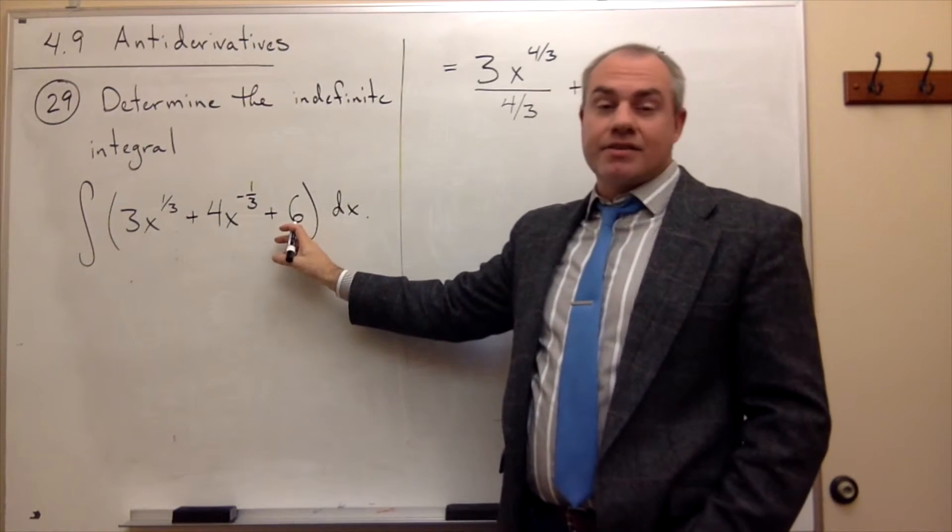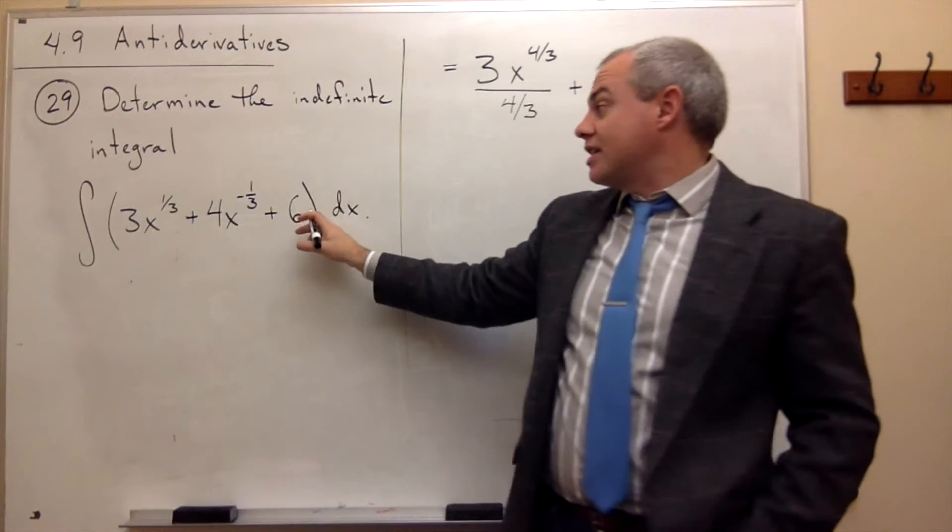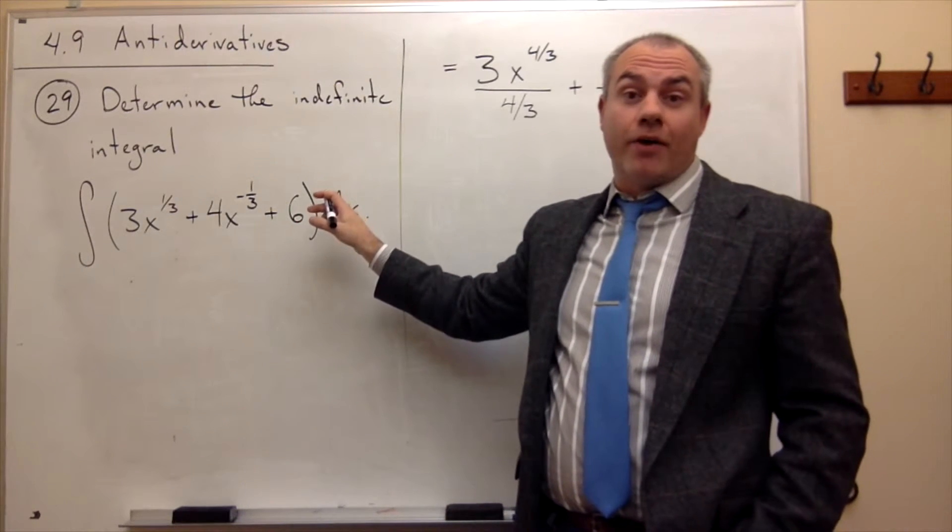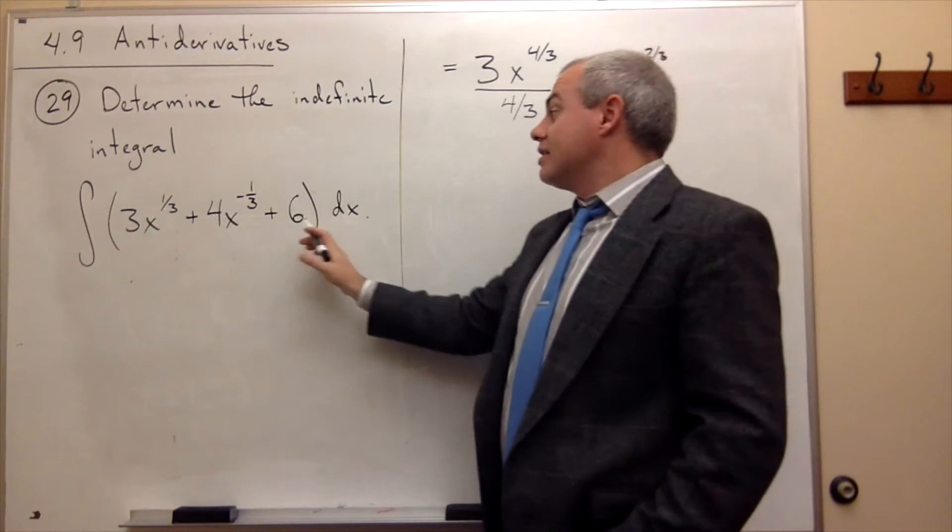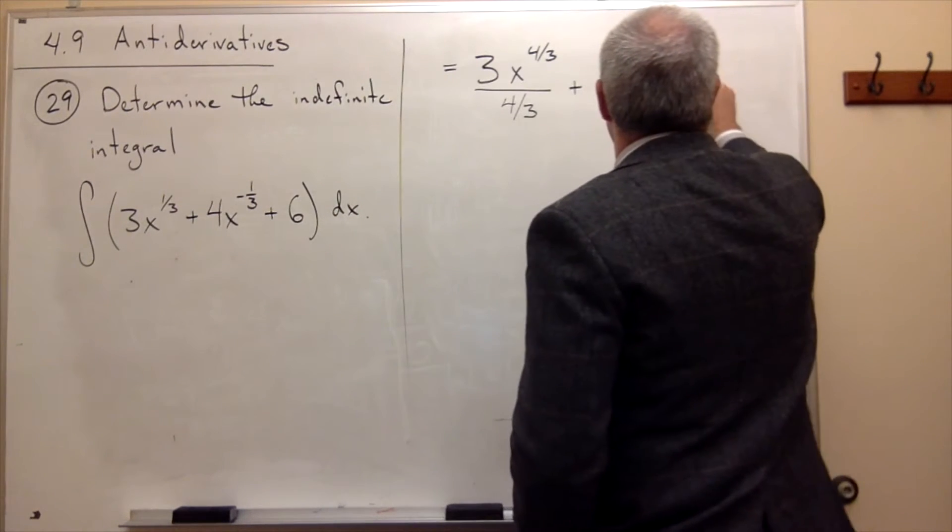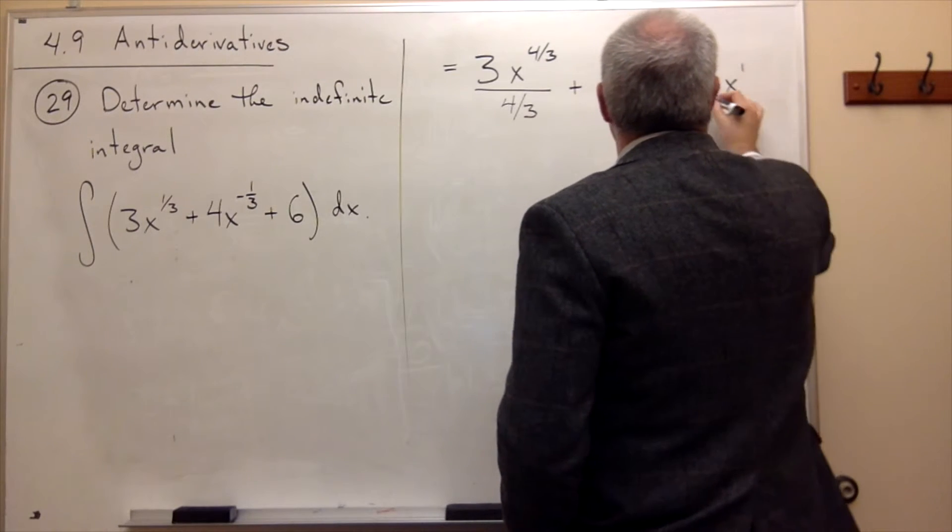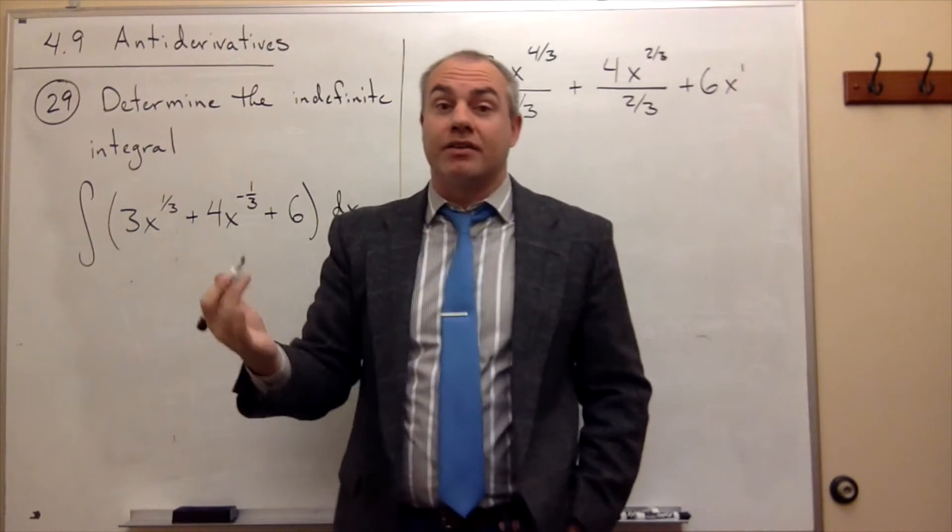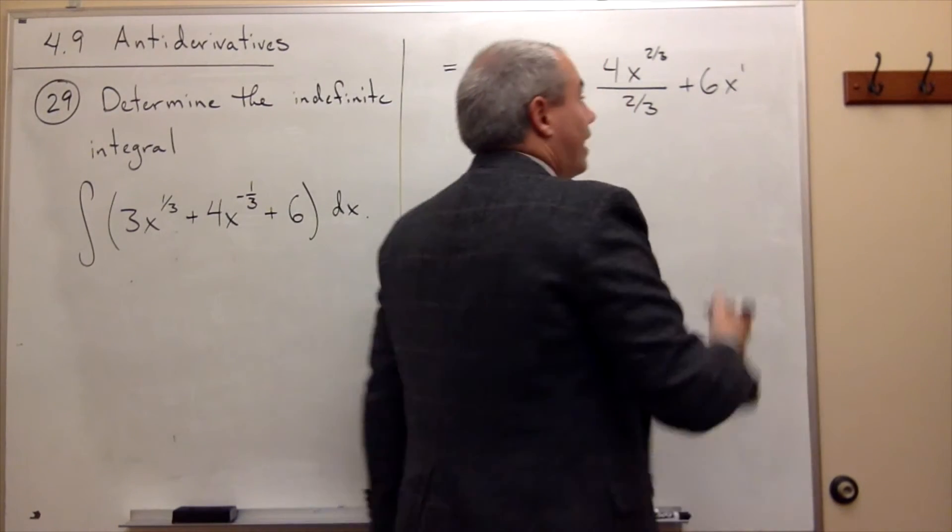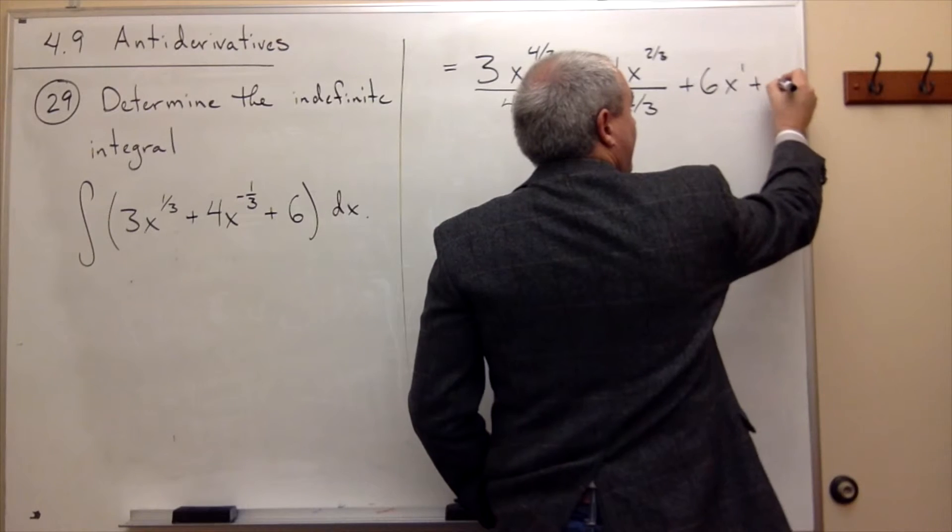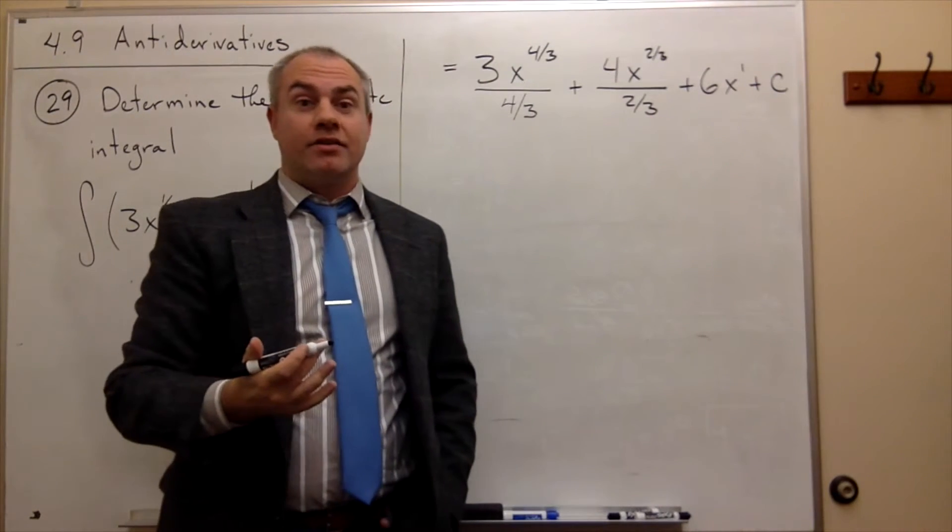Finally, I have 6. Now 6 could also be thought of as 6 times x to the 0 power. So I add 1 to the 0 power, giving me 6, is the constant, times x to the 1st, divided by 1 if you like. But divided by 1 doesn't really change anything. So I just get 6x. And then I need to remember that at the end I need to add on c, or my constant of integration.